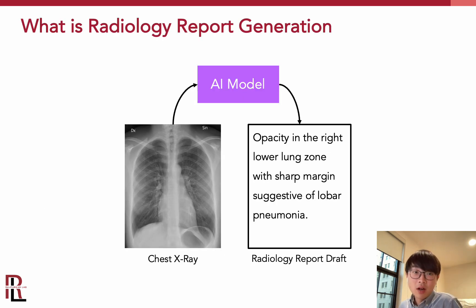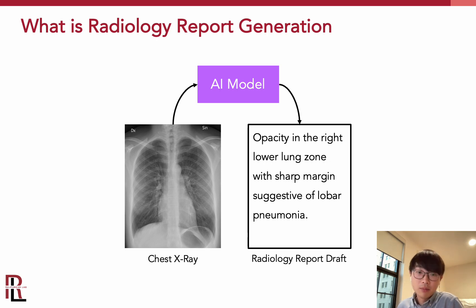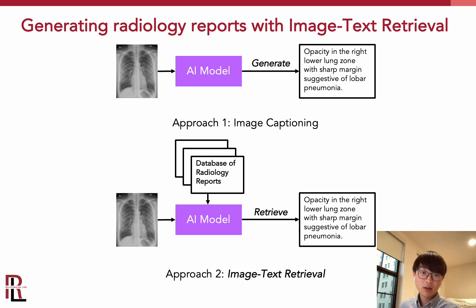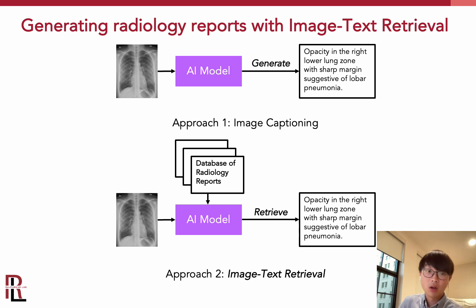To begin with, what is radiology report generation? It is a task where we feed a chest x-ray image into an AI model which then generates a radiology report about that input image. There are two different ways of approaching this task: having an AI model directly generate a caption of the input chest x-ray image, or having an AI model retrieve a report from a database that is closest to the input chest x-ray image. Our project was mainly focused on the second approach — the image text retrieval approach.